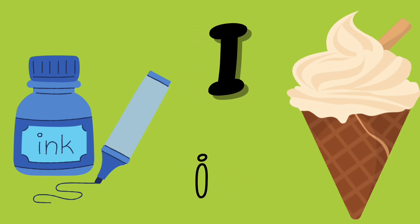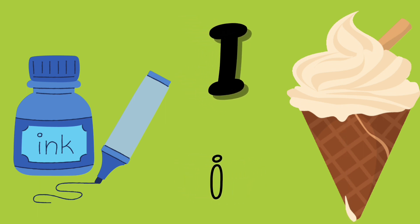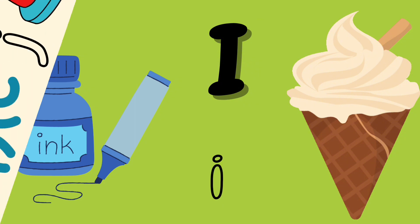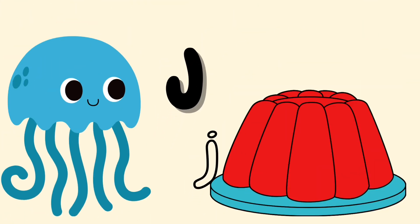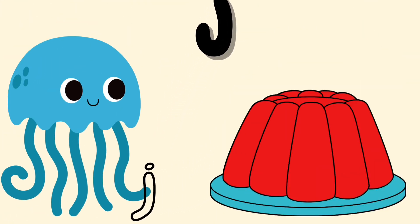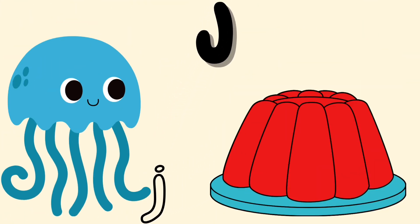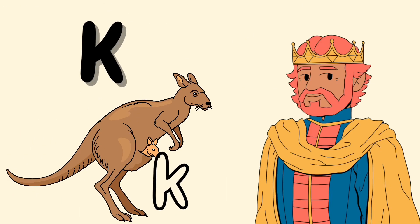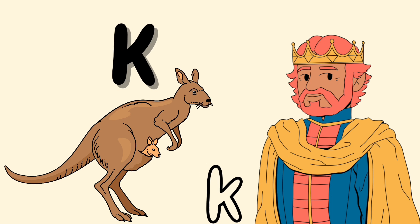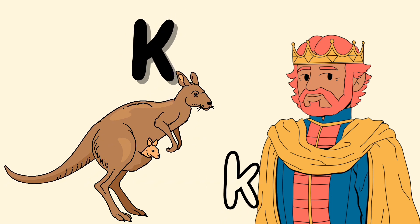I is for Ice Cream — A-O, Ice Cream, Ice Cream. J is for Jelly — J-J-Jelly, J-J-Jelly, J-Jelly.